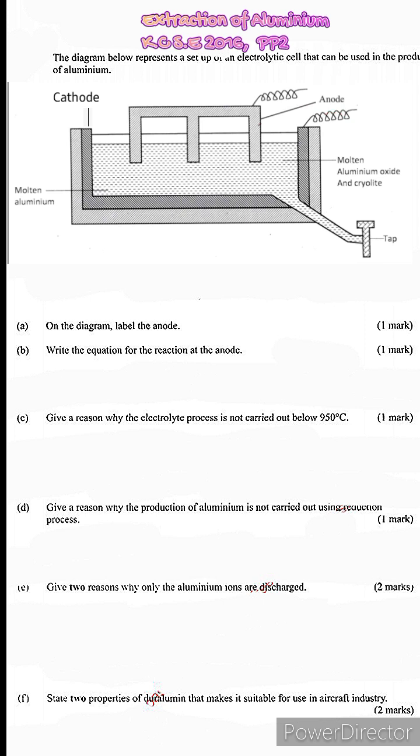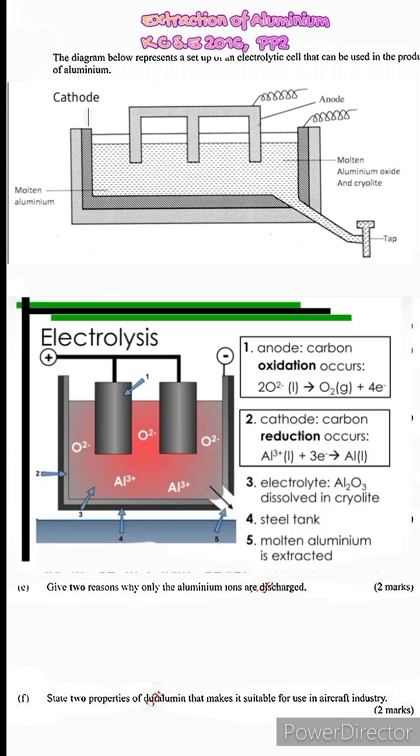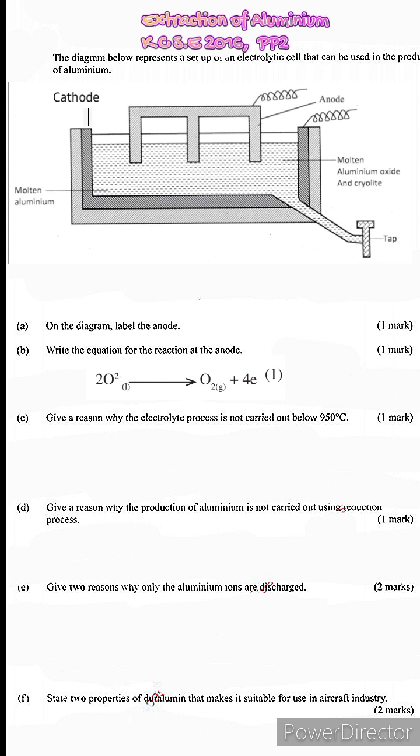B. Write the equation for the reaction at the anode. Now at the anode this is our positive electrode. So we are going to have negative ions migrating towards the anode. And these of course are going to be the oxygen ions. Now at the anode is where oxidation takes place. Oxidation involves the loss of electrons. So oxygen ions are going to lose electrons in order to form oxygen molecules. Now each oxygen ion is going to lose two electrons.